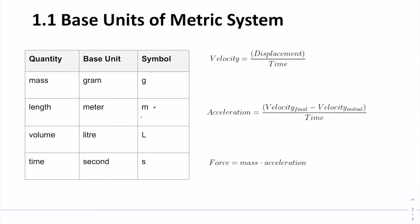The base units of the metric system — we have four main quantities that every other concept in physics is going to be based on, so it's important we know these ones. We have mass; the base unit is the gram, shown with the symbol G. One gram is about equivalent to one paperclip. We have length; the base unit of length is the meter, which is about three feet, shown with an M.